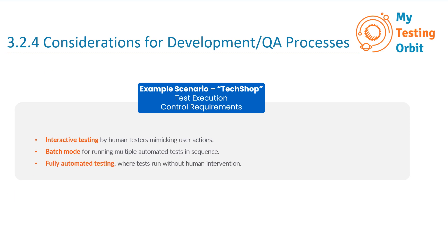The third one is fully automated testing where tests run without human intervention. Let's say every night the TAA initiates a fully automated test run. It performs a comprehensive set of tests without any human intervention, covering everything from login functionality to placing orders. In the morning you receive a report detailing the results, including any errors or performance issues detected.